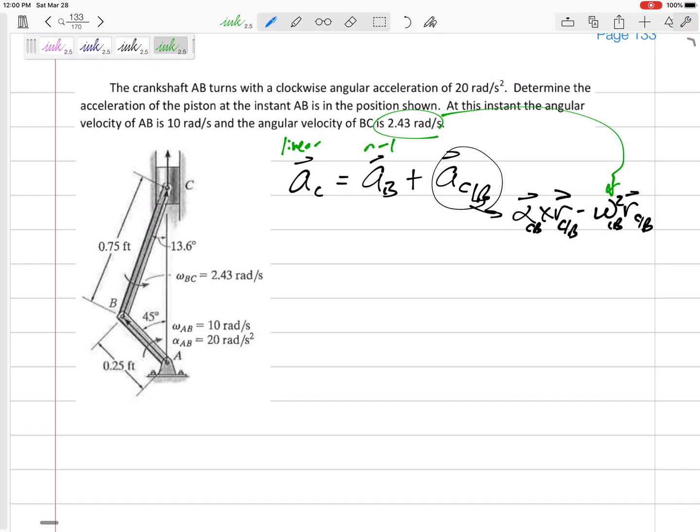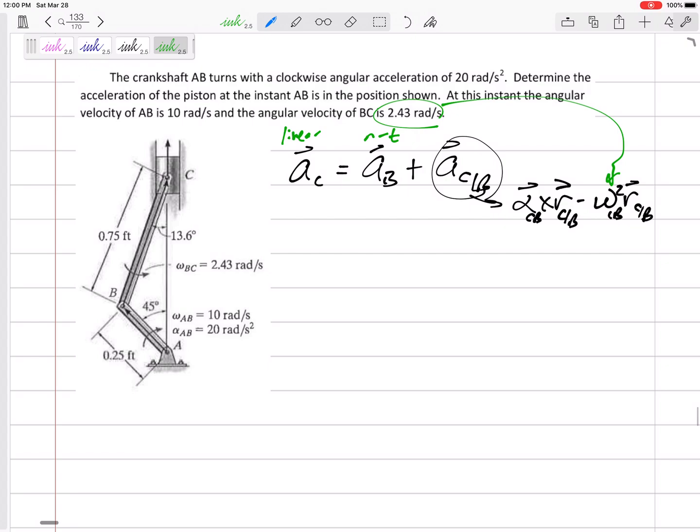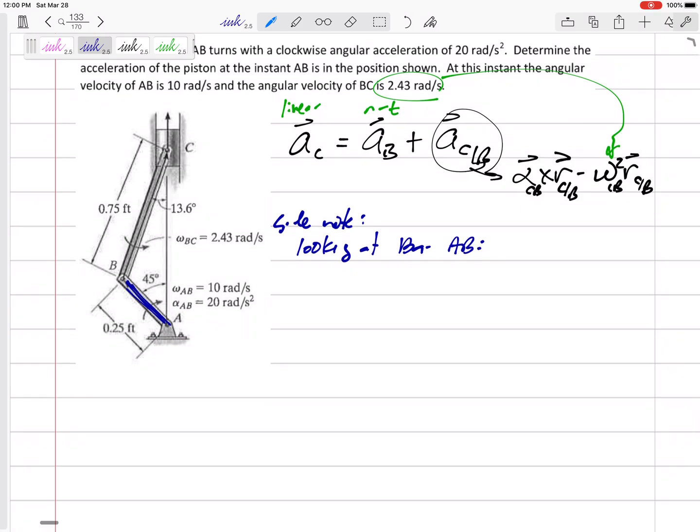Point B, not so lucky. Point B is normal tangential. So let's kind of take a side note. Let me do this maybe in blue. Side note. And let's find a_B not by looking at bar BC, but let's find it by looking at bar AB.